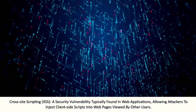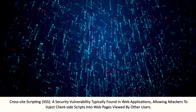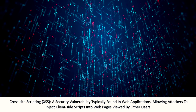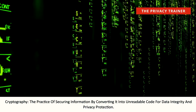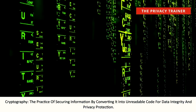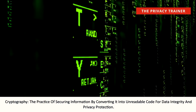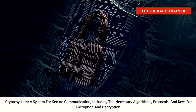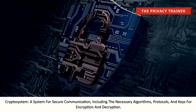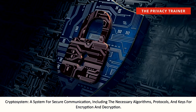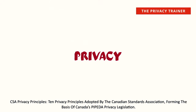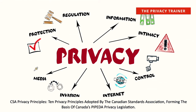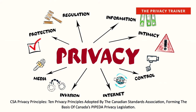Cross-site scripting, XSS. A security vulnerability typically found in web applications, allowing attackers to inject client-side scripts into web pages viewed by other users. Cryptography. The practice of securing information by converting it into unreadable code for data integrity and privacy protection. Cryptosystem. A system for secure communication, including the necessary algorithms, protocols, and keys for encryption and decryption. CSA privacy principles. Ten privacy principles adopted by the Canadian Standards Association, forming the basis of Canada's PIPEDA privacy legislation.